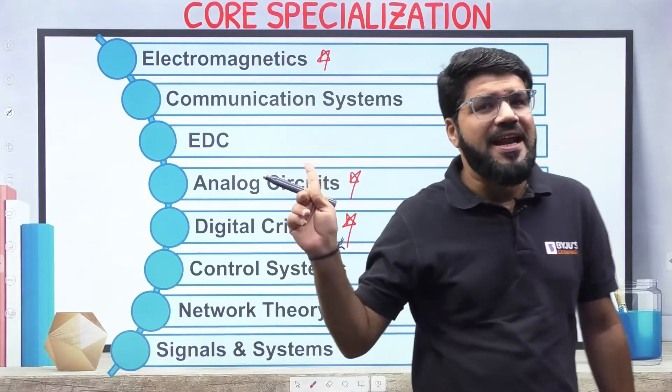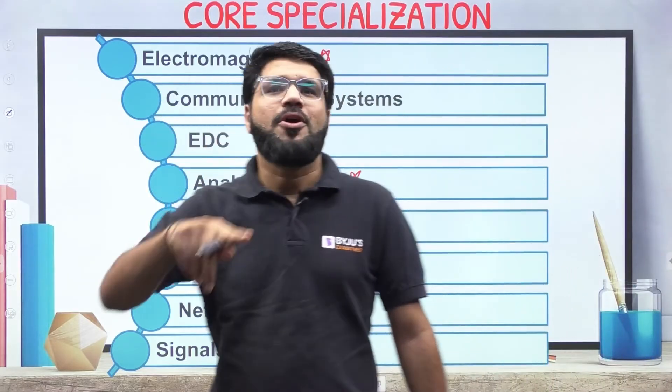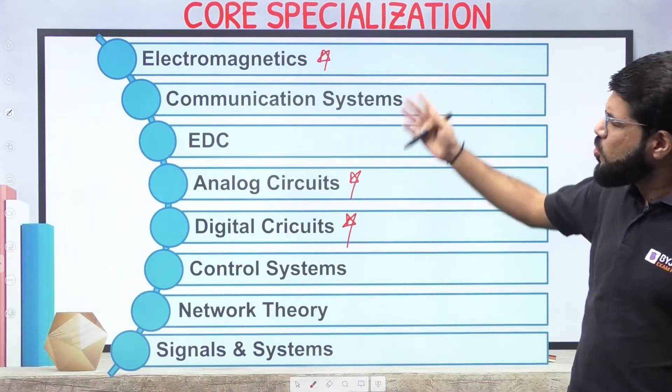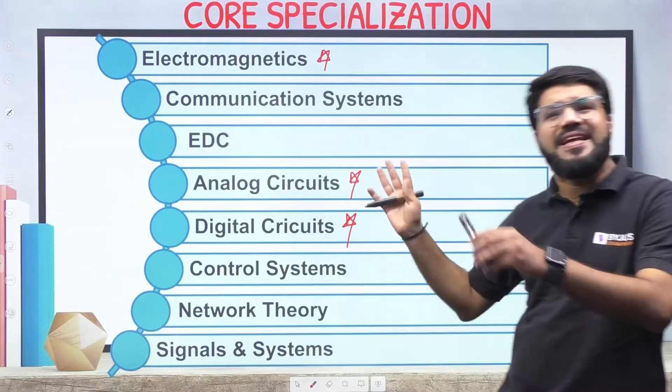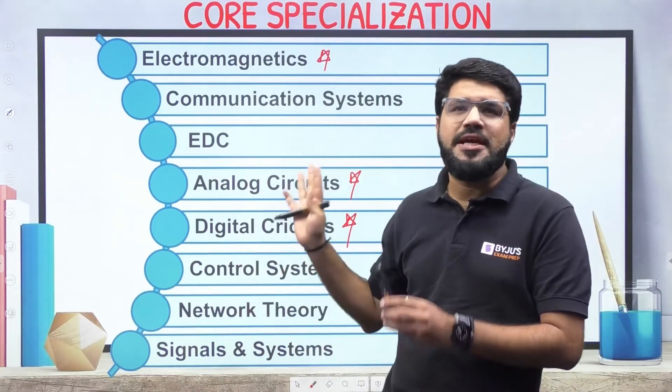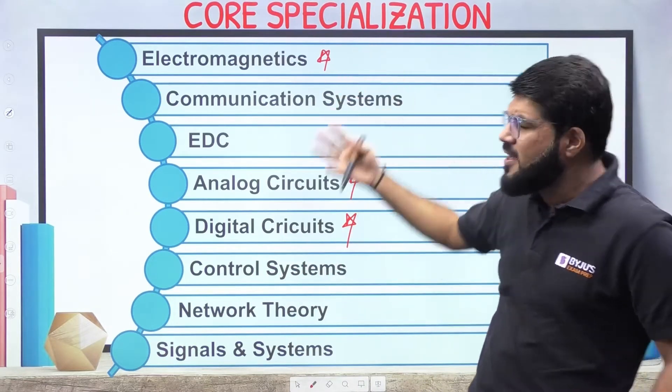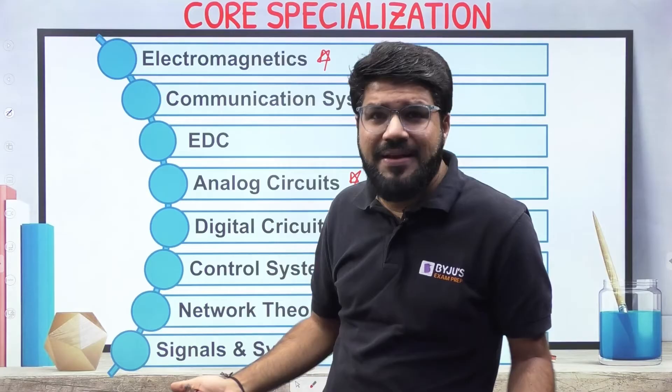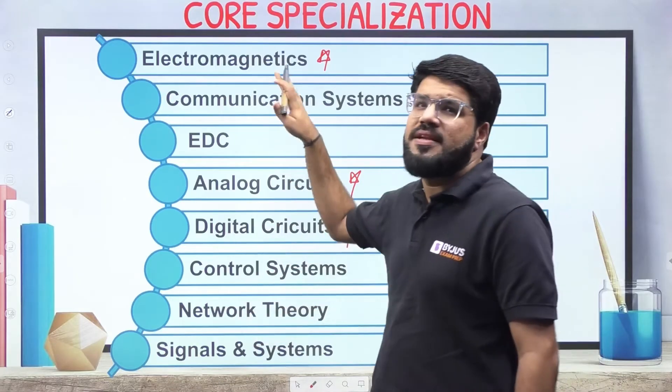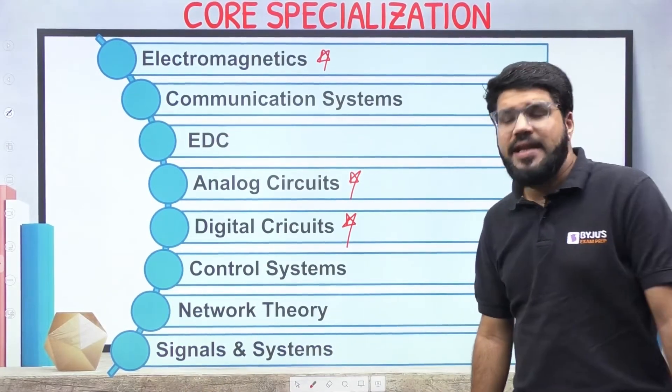Then Control Systems, Network Theory, Signal and System. Surprisingly we see less questions in Signal and Systems in ISRO as well as less questions in Communication. I'm not telling it doesn't come, but less. Like Electromagnetics always containing more than 10-12 questions, Communication containing somewhere around 5-7. But there is one more thing - the core communication syllabus of GATE, but there are some added topics of communication that I will put in the allied area.